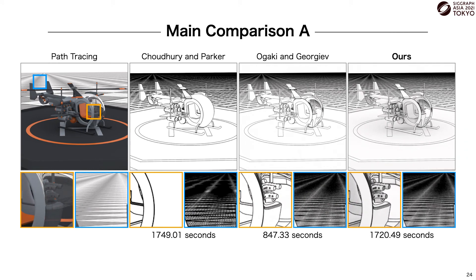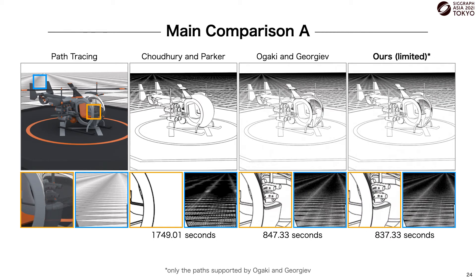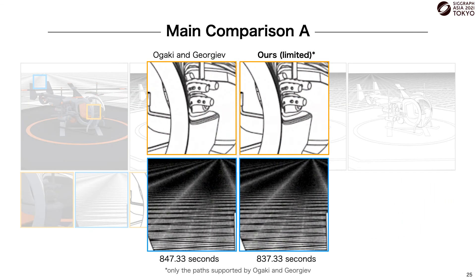In our method, we see a shading-like effect as a result of testing for feature lines at every edge of a path. As this can be undesirable, we can programmatically restrict feature line detection to only certain path types, for example, as a comparison, to just those paths supported by the method of Ogaki and Georgiev. If we zoom in, we see that the resulting renders are nearly identical and have comparable performance.